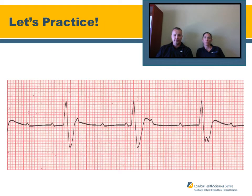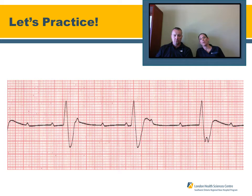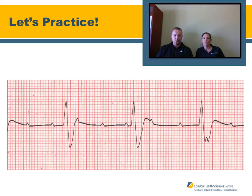Looking at the next strip: it appears really slow, with a heart rate of about 30 if you multiply the QRS complexes by 10. The QRS complexes look somewhat bizarre — they are wide, greater than three small boxes. Looking at the P waves, they seem to be all over the place, marching right through the QRS complexes. This is called an AV mismatch, or atrial-ventricular mismatch. This is a third-degree AV block at a rate of 30.